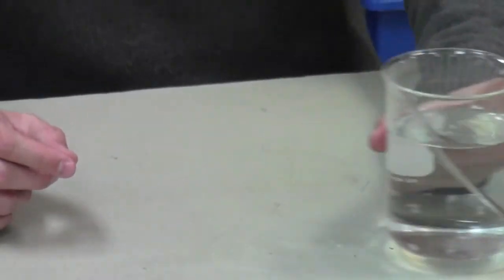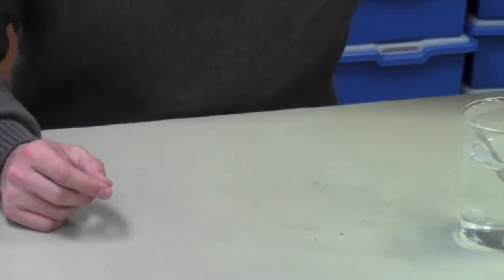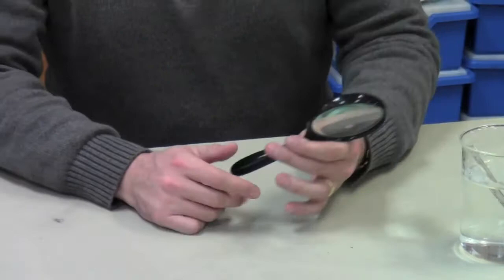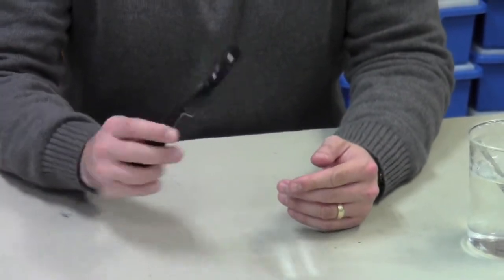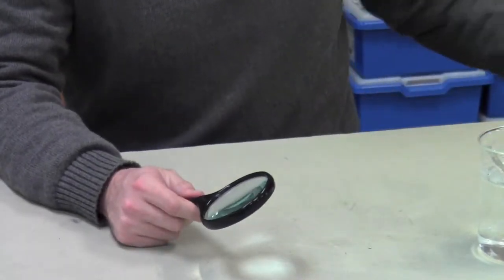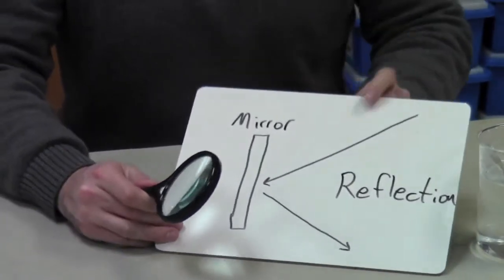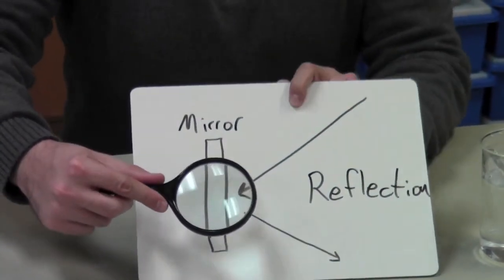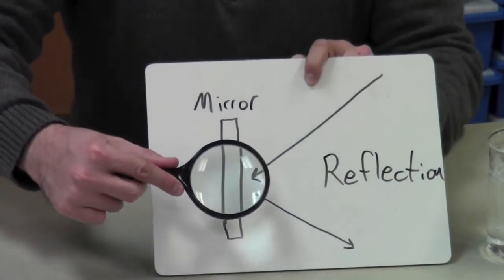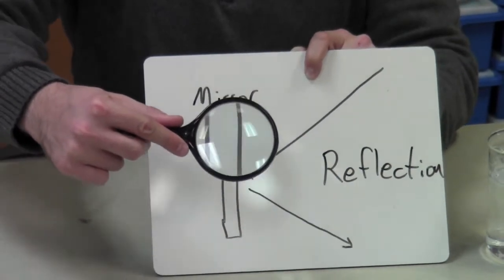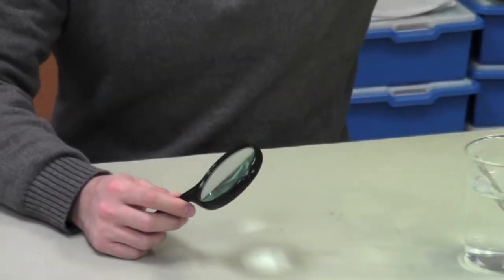Now refraction is interesting because we can use refraction in everyday items like this hand lens or magnifying glass to be able to see things or to magnify, make larger items by bending the light. But we can do that, hand lens is a good example.